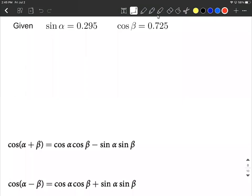Okay, in this example, we are given that sine of alpha is going to be 0.295 and cosine of beta is 0.725.